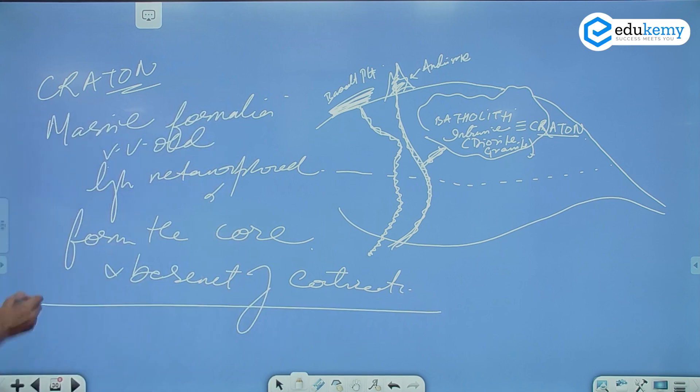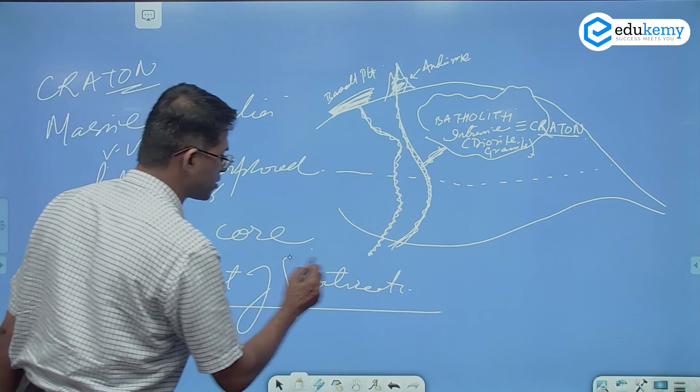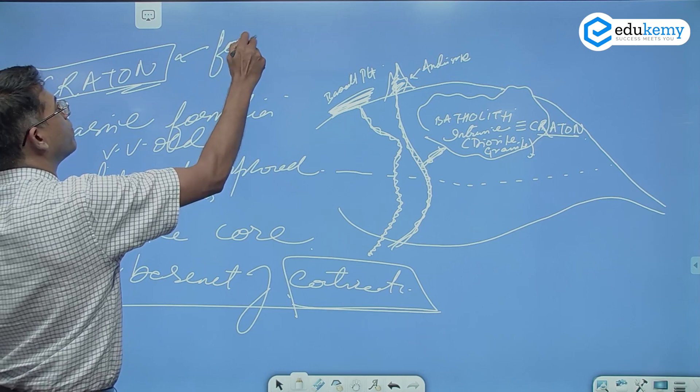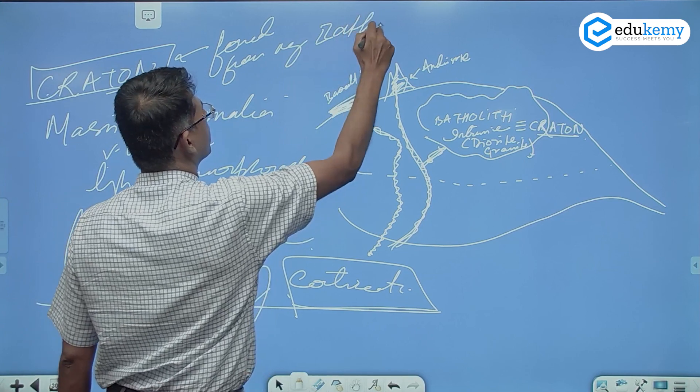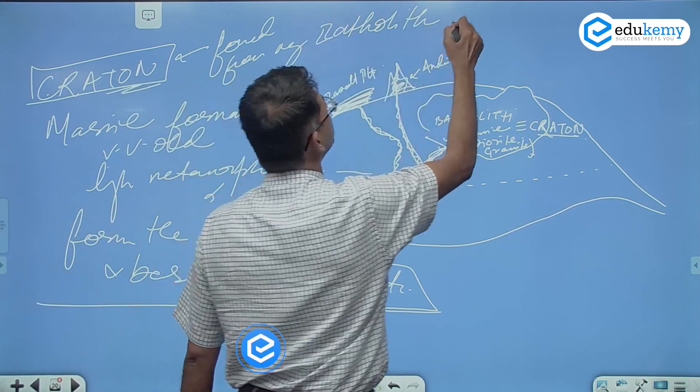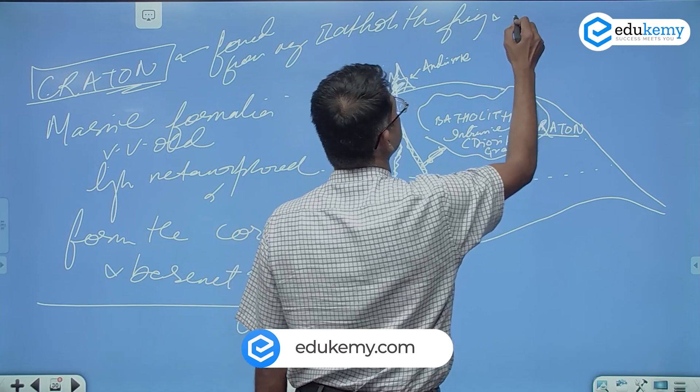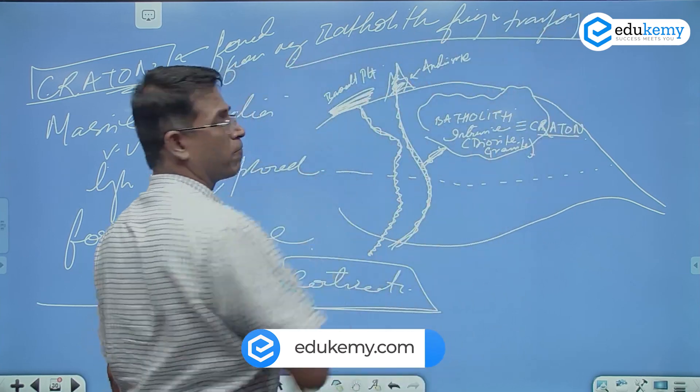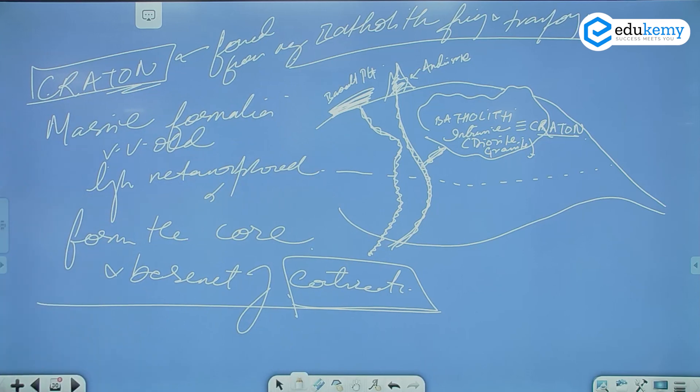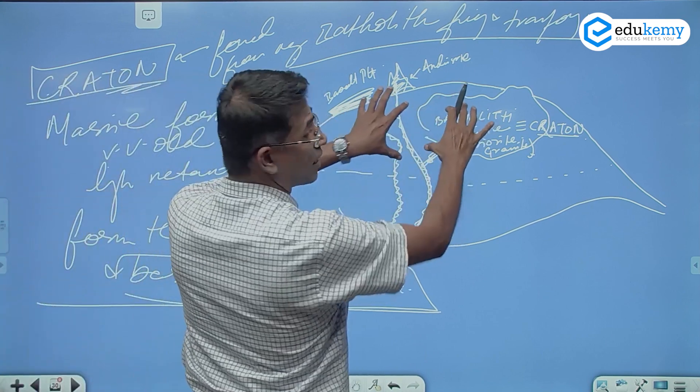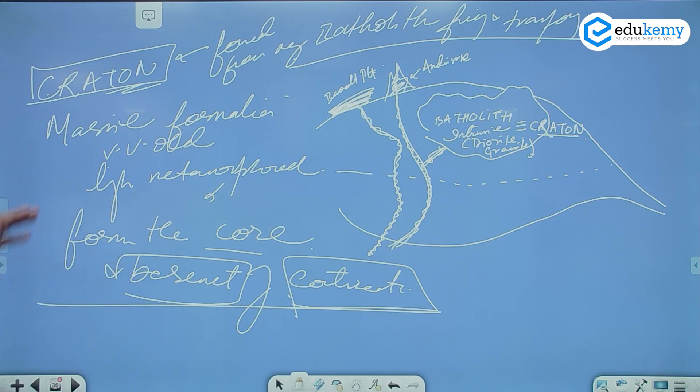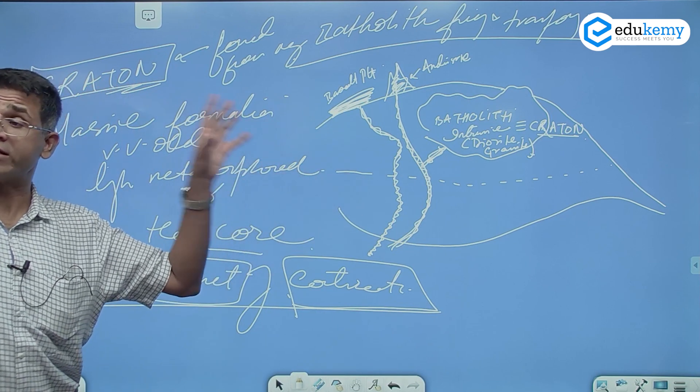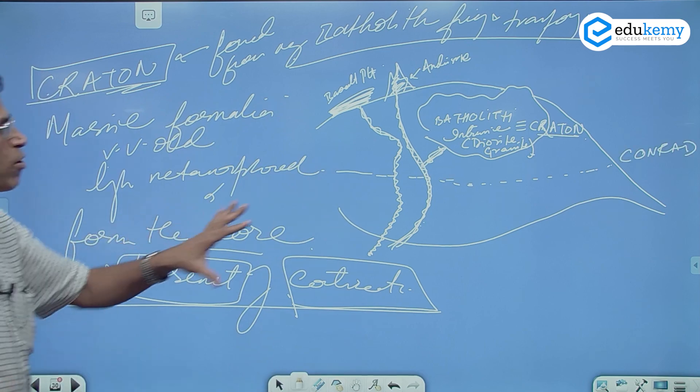Remember, this is not in the oceans. It is only in the case of continents. Cratons are formed from many Batholiths, from many Batholiths, fusing and transforming. Forms the core and the basement. It becomes what's called as the basement rocks and the very, very hard, very hard, very resistant rocks. You all understand what's the Craton now?